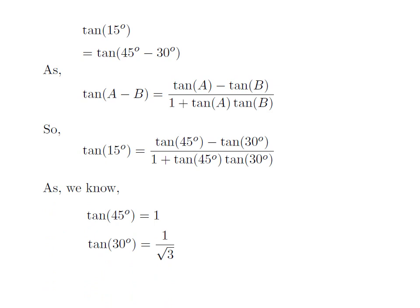We know that tan of 45 degrees is equal to 1, and tan of 30 degrees is equal to 1 by square root of 3. So, we replace these values in the above formula.